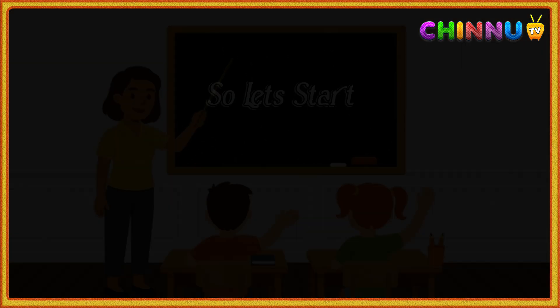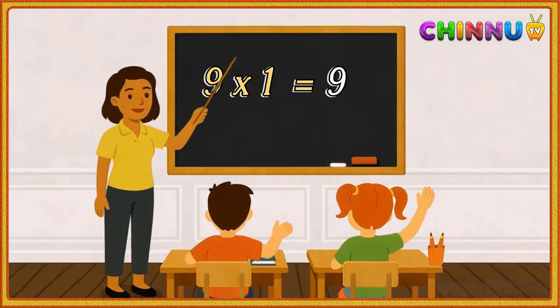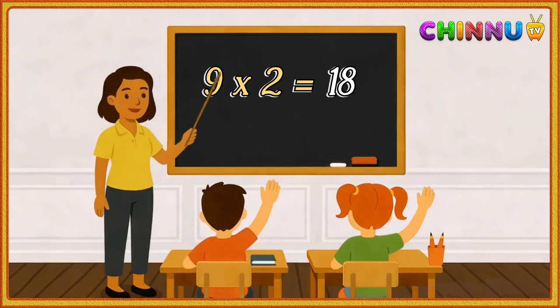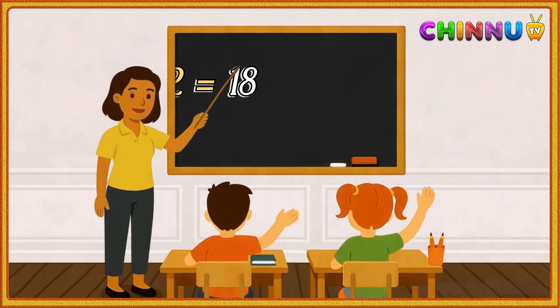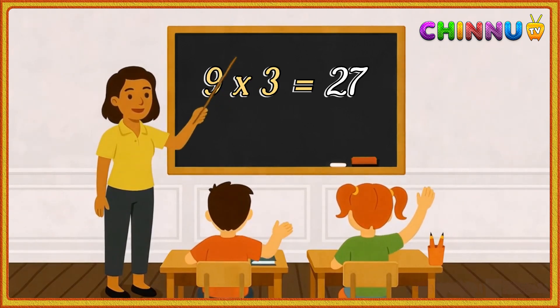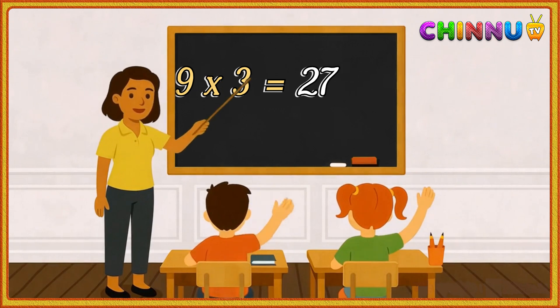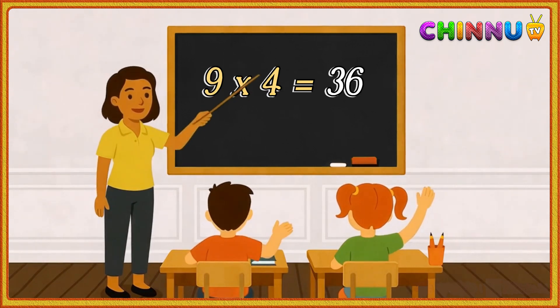So let's start. 9-1s are 9, 9-2s are 18, 9-3s are 27, 9-4s are 36,